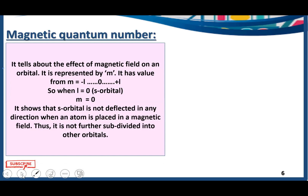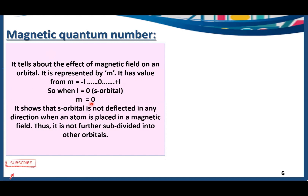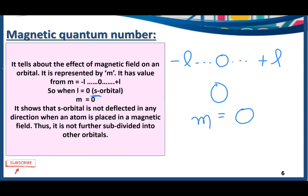Next comes the magnetic quantum number. As the name indicates, it tells us about the effect of a magnetic field on an orbital. It is represented by small m, and it has values ranging from −l to 0 to +l. When l equals 0 for the s orbital, m is also equal to zero, because the s orbital is not deflected in any direction when an atom is placed in a magnetic field. This is why the s subshell is not further divided into sublevels.